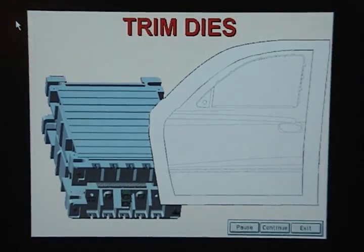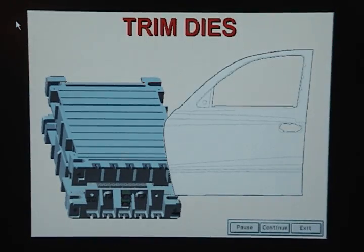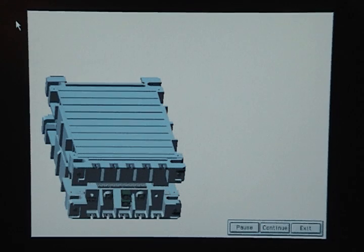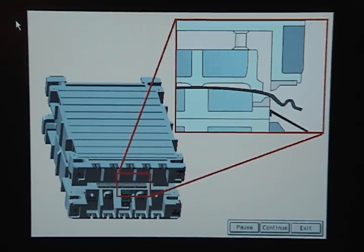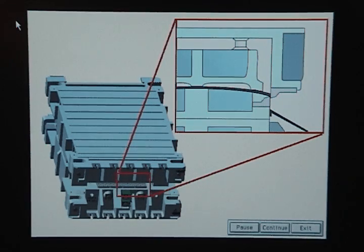Trim dies are used to remove excess metal from panels. They have upper trim steels and lower trim steels that cut metal using a shearing action, much like a pair of scissors.